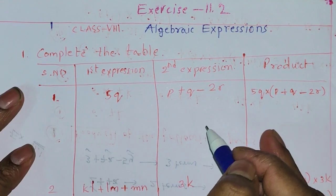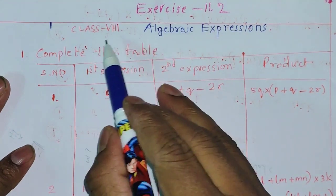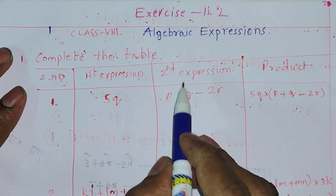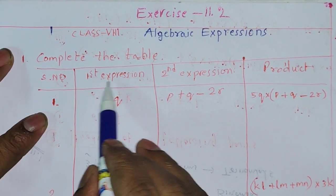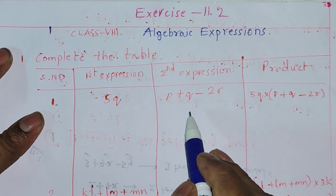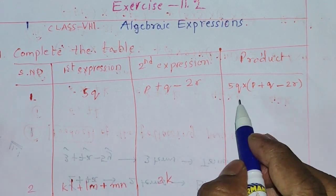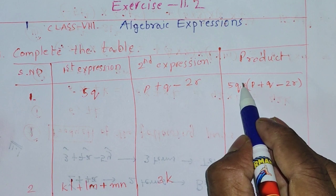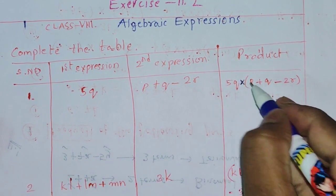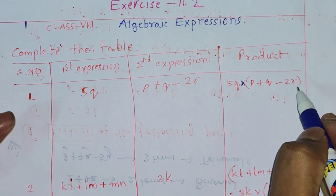Hi everyone, I'm going to explain exercise 11.2 in 8th class mathematics, algebraic expressions. The first question is to complete the table. The first expression is 5q, the second expression is p plus q minus 2r, and they are asking for the product of those two. Since they are asking for the product, I have to write 5q into p plus q minus 2r.